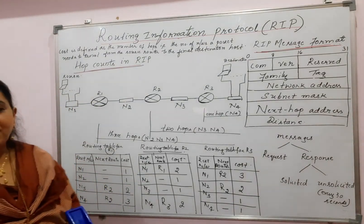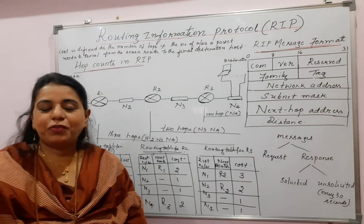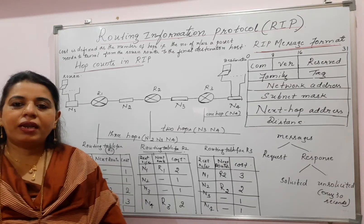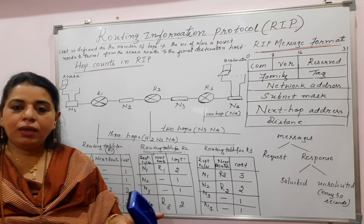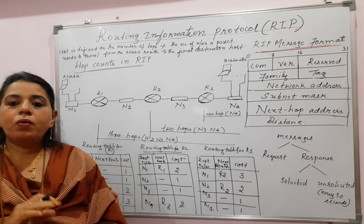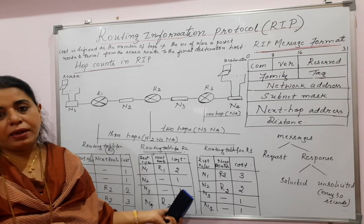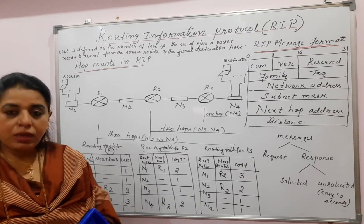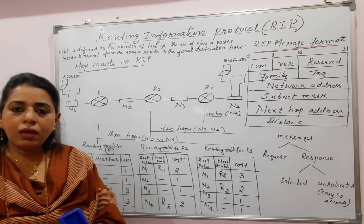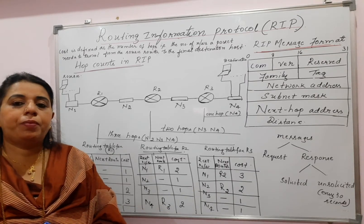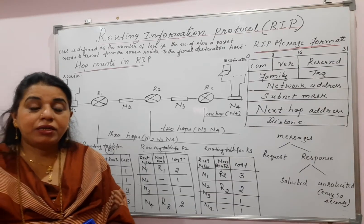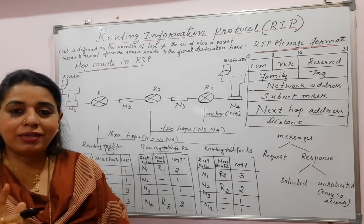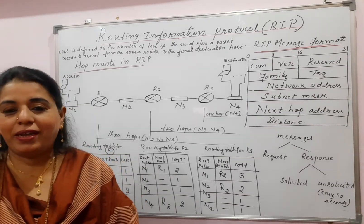This is how you construct the routing tables for all three routers. In any given network, if you know how to find the number of hops correctly, you can easily write down the routing tables. When it comes to implementation, remember the Routing Information Protocol runs at the application layer.